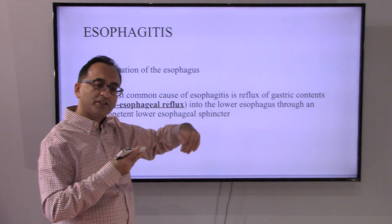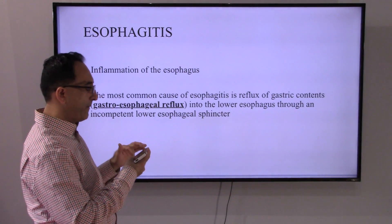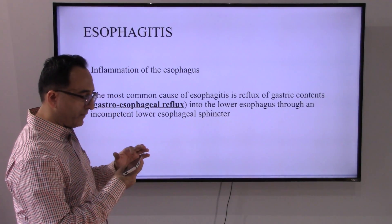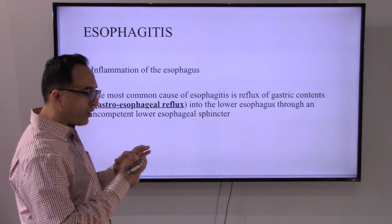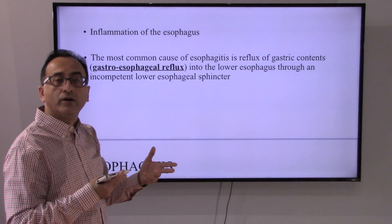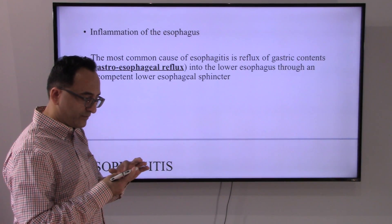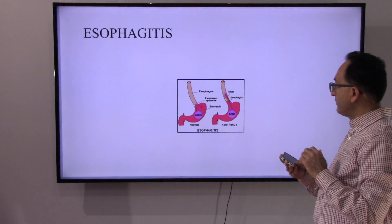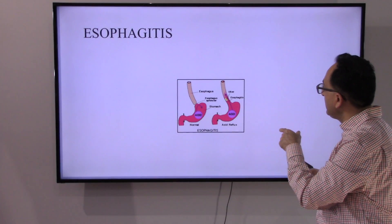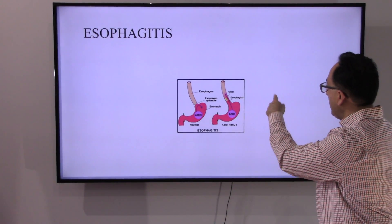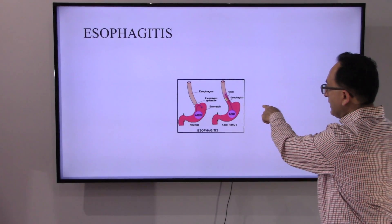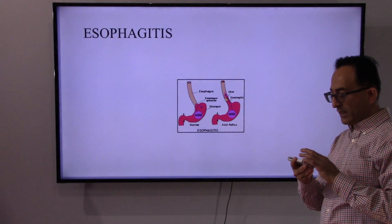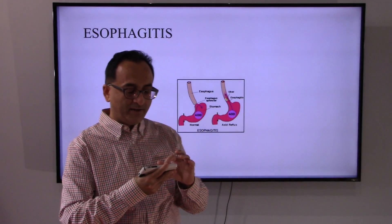Another disorder we can encounter following the GI tract is inflammation of the esophagus, also called esophagitis. This can also happen because of gastroesophageal reflux disease. Here you can see how the normal esophagus works and what goes wrong with acid reflux — it may unfortunately lead to inflammation of the esophagus.